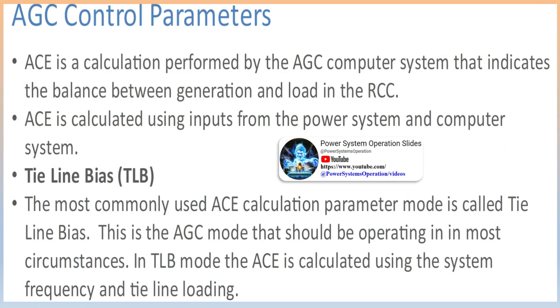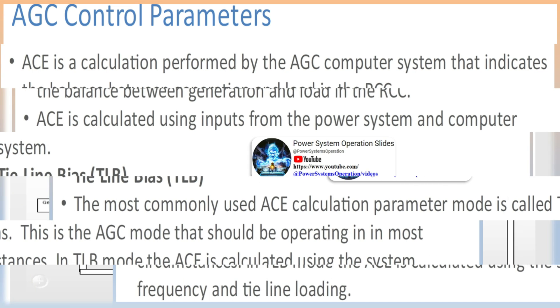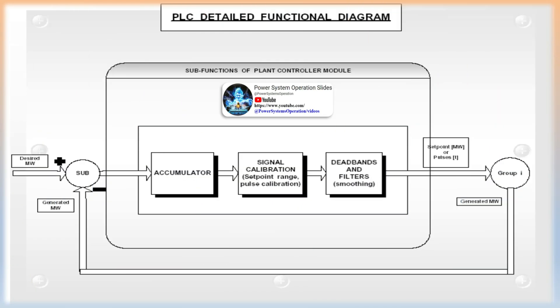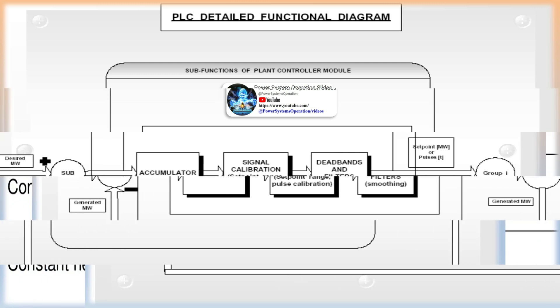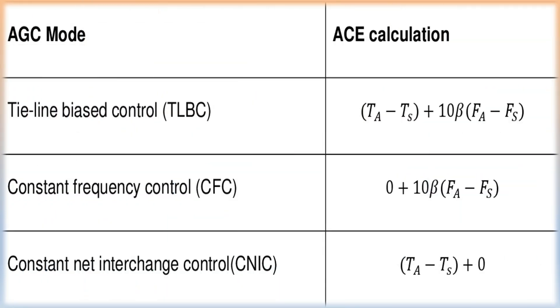Switching AGC to constant net interchange control would only be done if all frequency signals were lost. The ACE calculation equation for CNIC is: ACE = MW flow minus MW target. Constant frequency control CFC: a third AGC mode available to the generation dispatcher is constant frequency control. In this mode, the interchange or flow component of the ACE calculation is removed. The AGC will only respond to frequency change to satisfy the frequency target, and will pulse the generation to ensure frequency is maintained. The only time CFC should be used is if the operating area is isolated and operating as an island. Caution must be taken to ensure the bias setting is adjusted properly for isolated operation or frequency can deviate considerably.